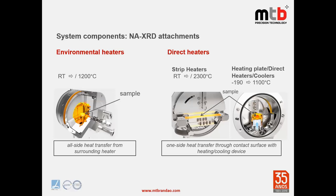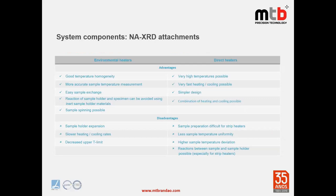There are two types of heaters: environment heaters and direct heaters. Environment heaters offer good temperature homogeneity, more accurate sample temperature, easy sample extension, and sample spinning; while direct heaters allow very high temperatures, very fast heating and cooling, and a simpler design. Disadvantages of environment heaters include slower heating/cooling rates and upper temperature limits; disadvantages of direct heaters include less temperature uniformity and possible reaction between sample and heater wall.